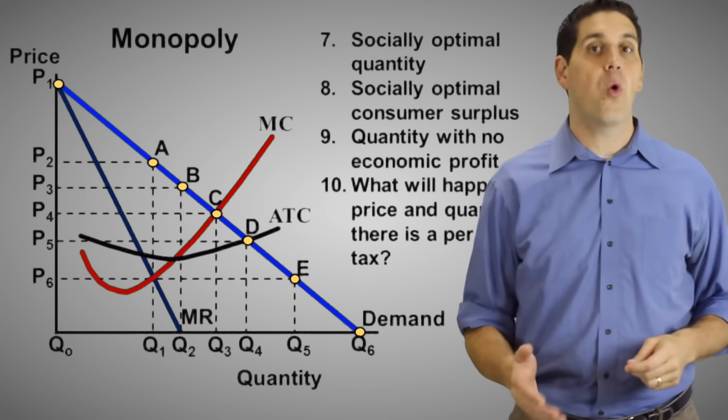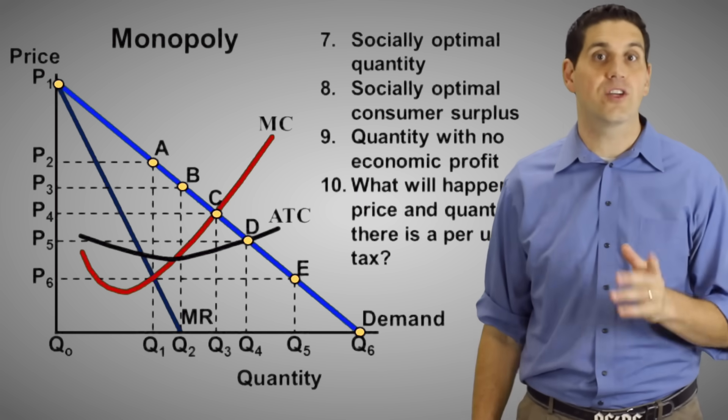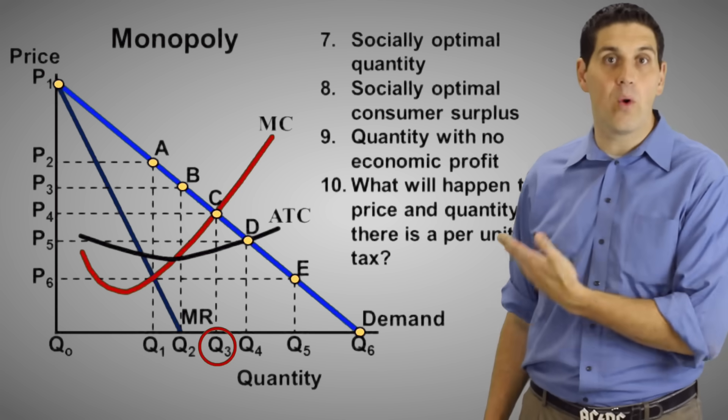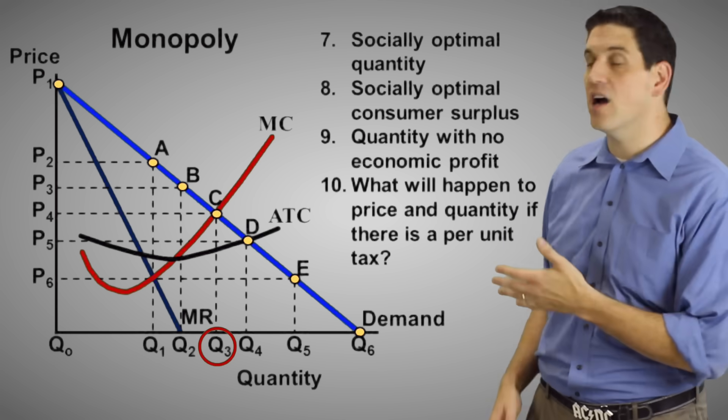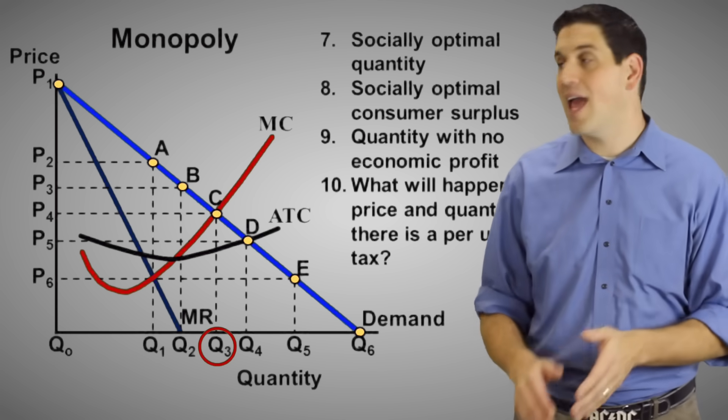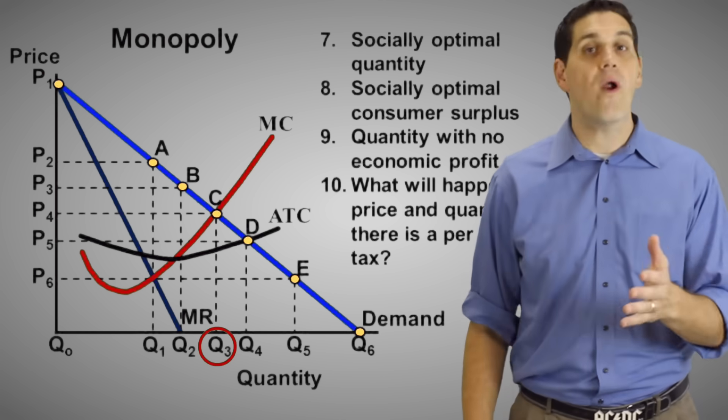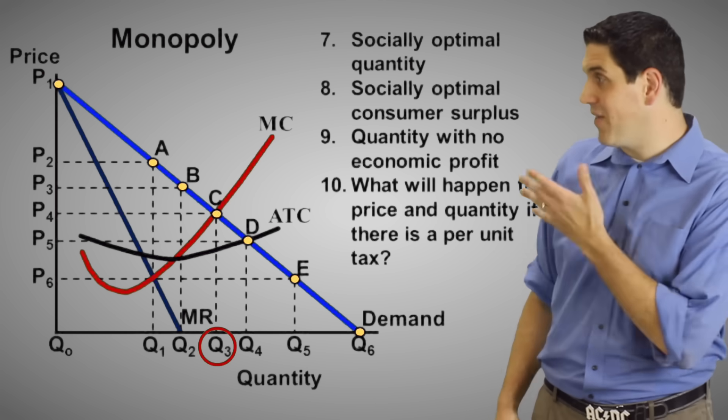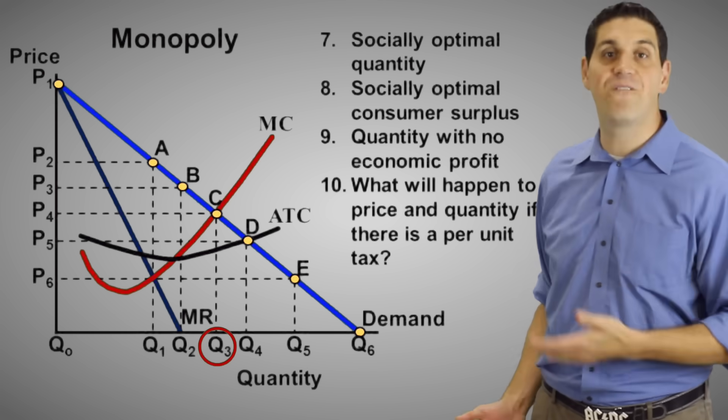The socially optimal quantity or the allocatively efficient quantity is right there at Q3. This is a place where the price, what people want to pay, exactly equals the additional cost of producing those units. So society is saying we want this many units. Before I answer the rest of the questions, let's go back and talk about the idea of socially optimal and being efficient.